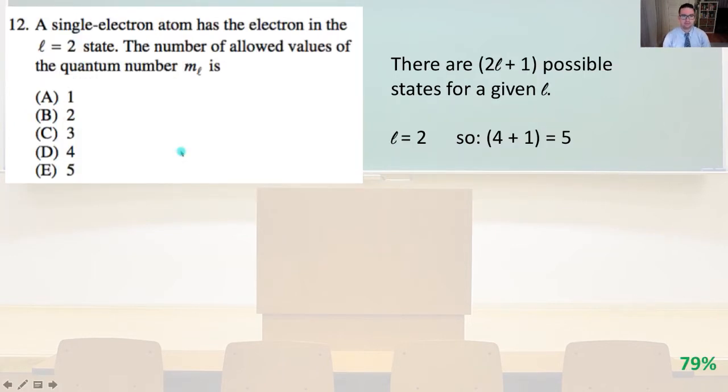Number 12. A single electron atom has the electron in the L equals 2 state. The number of allowed values of the quantum number M subscript L is, so there is going to be 2L plus 1 possible states for a given L. We know that L equals 2 in this problem. So therefore, 2 times 2 is 4 plus 1 equals 5 and that is answer E.